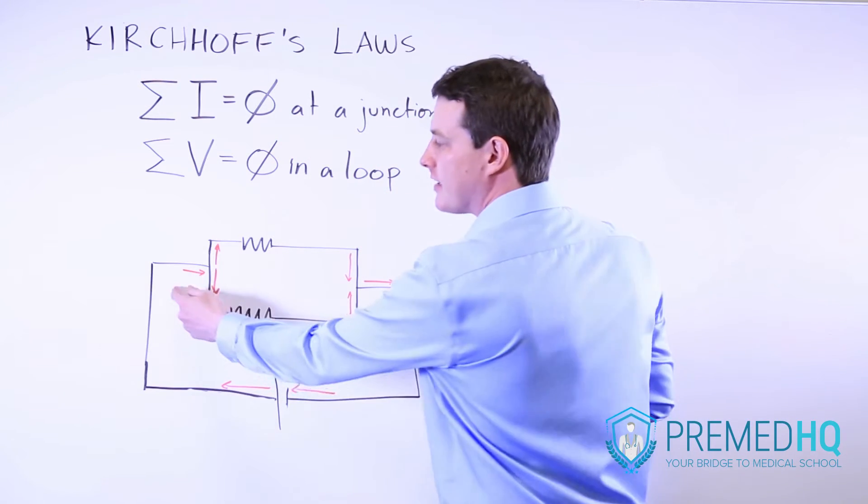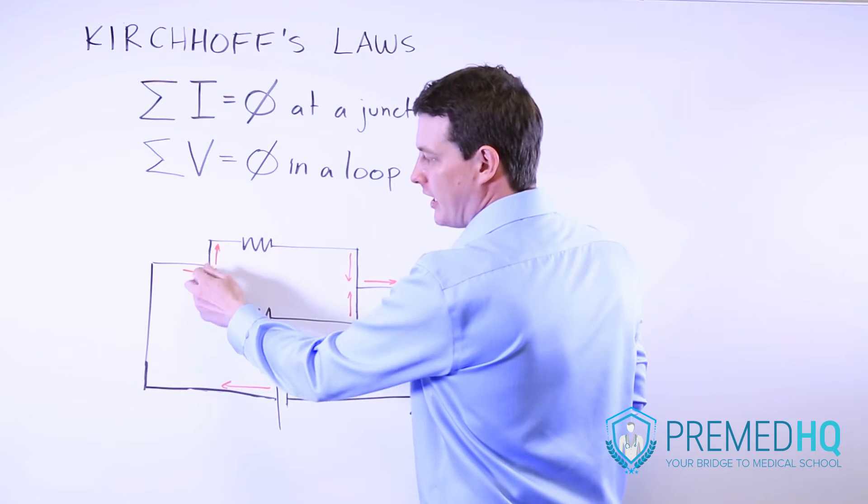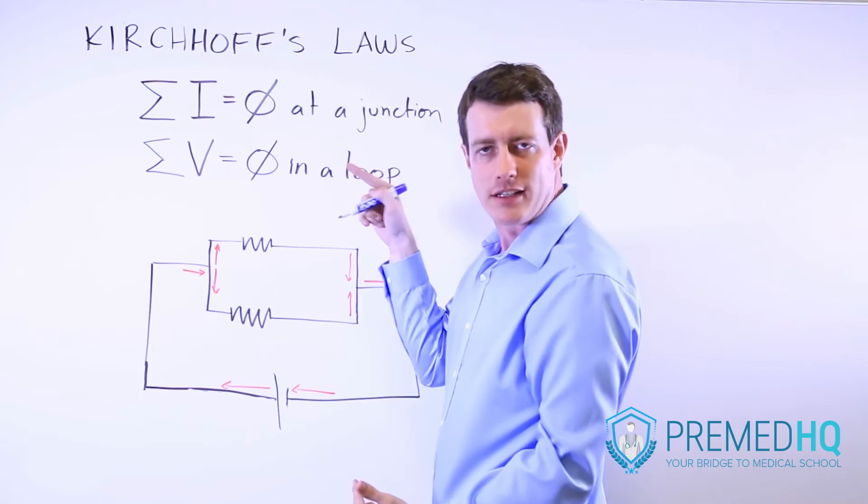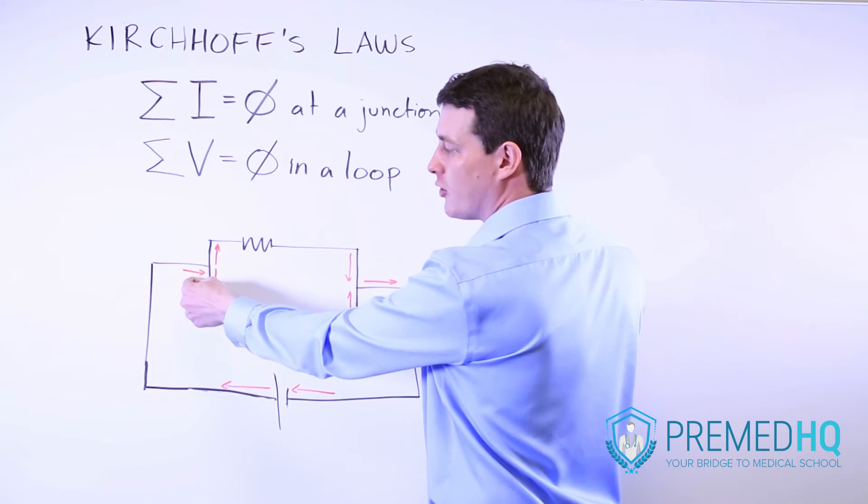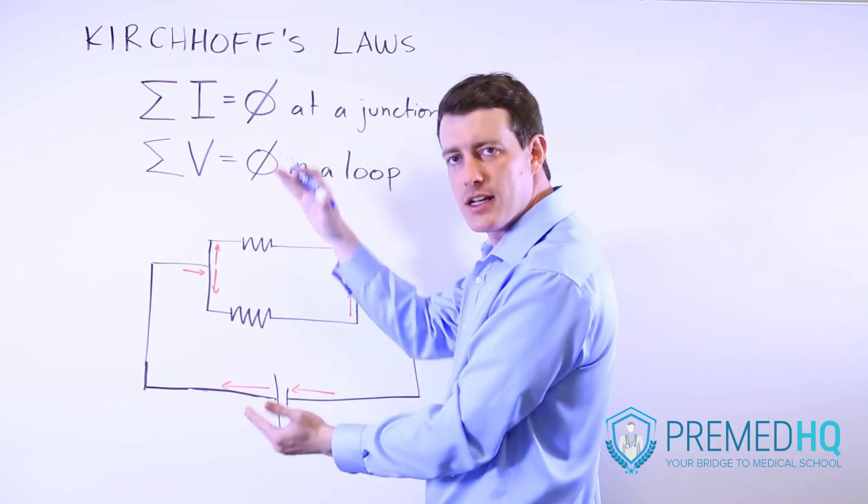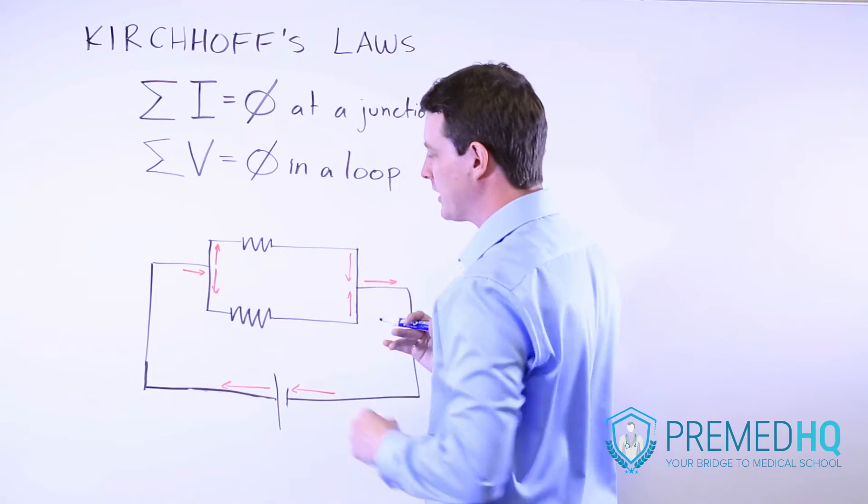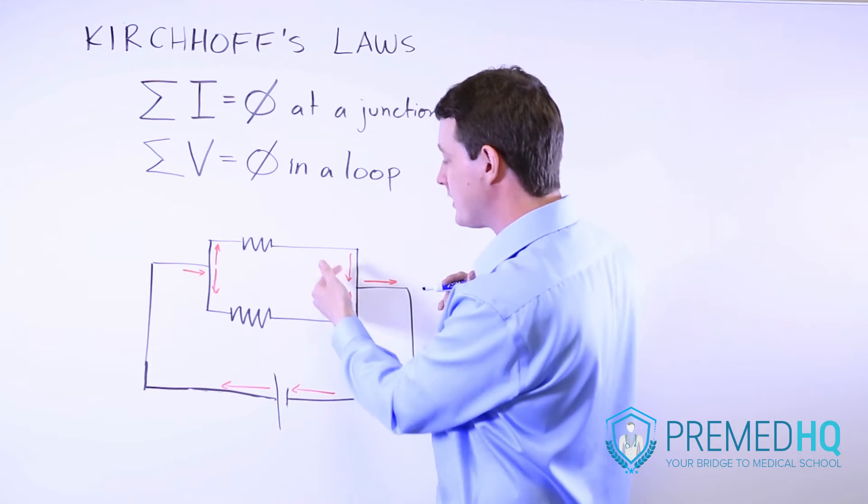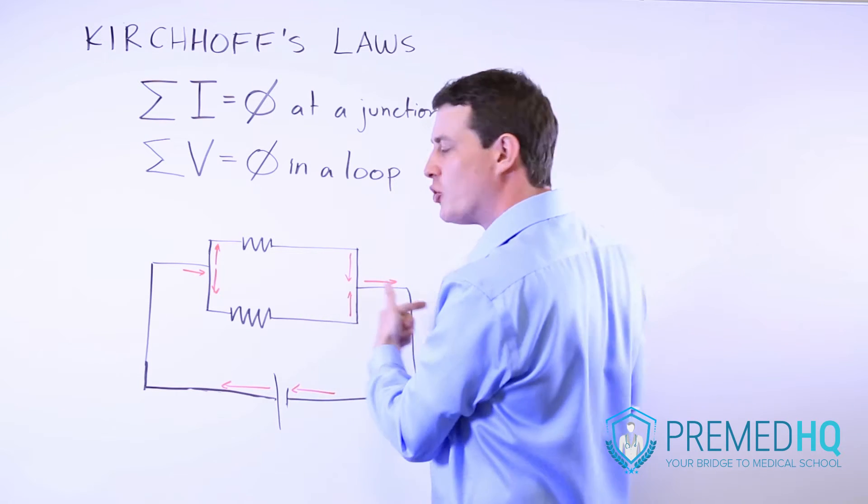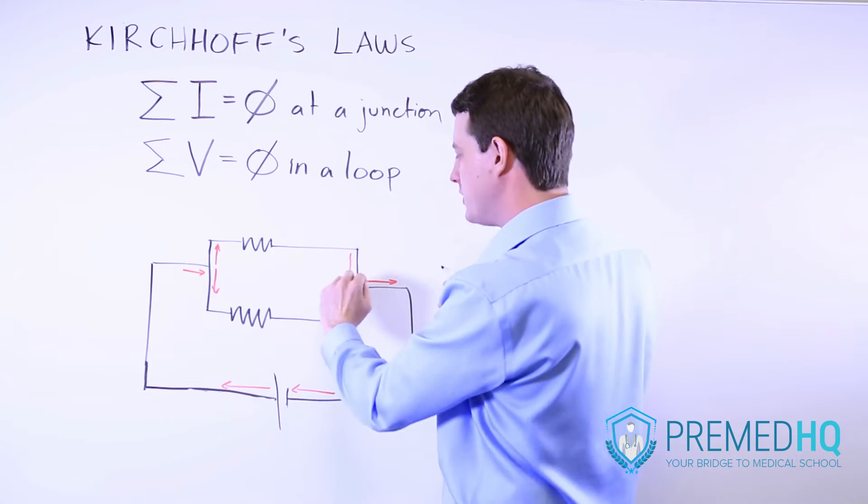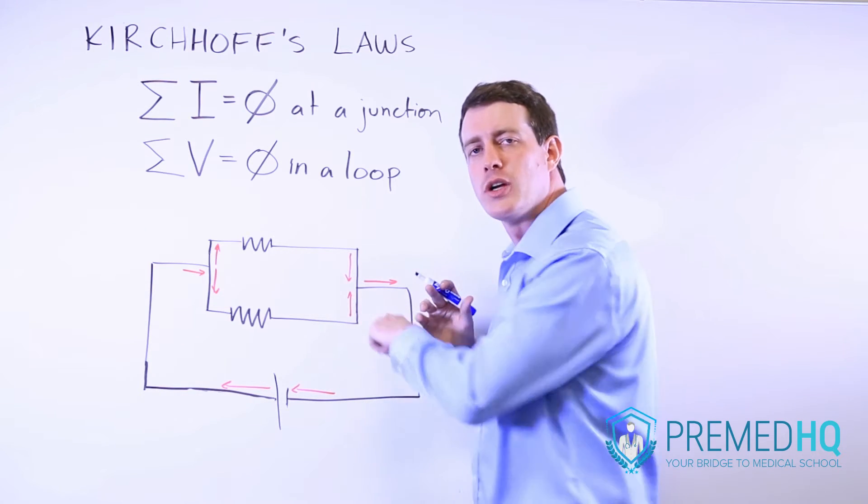What that means is that the current entering the junction is going to be the same as the current leaving the junction. So essentially at a junction like this, the current coming in will split, part of it going up and part of it going down, and the currents entering this junction are going to join together. And so the sum of these two currents equals that current there.